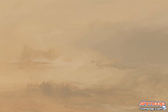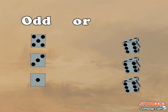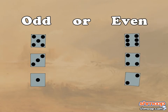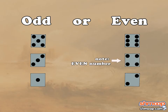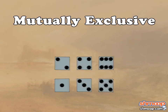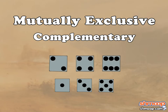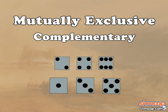How about rolling a die and getting an odd number, or an even number? They are both mutually exclusive and complementary, because if you don't get an even number, you're going to get an odd number, and vice versa.